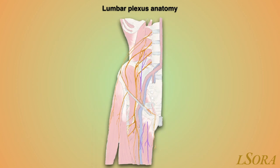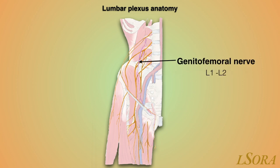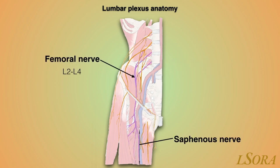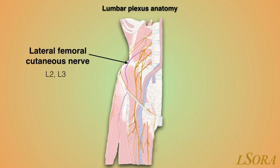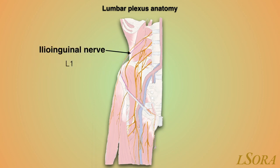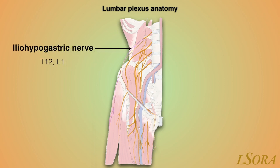You will see in this schematic how the nerves form from the lumbar plexus. The lumbar plexus is made up of divisions of the first four lumbar nerves plus contributions from T12. We will start with the obturator nerve, then the genitofemoral nerve, the femoral nerve as it then passes down to become the terminal branch of the saphenous nerve, the lateral femoral cutaneous nerve, the ilioinguinal nerve, and finally the iliohypogastric nerve.